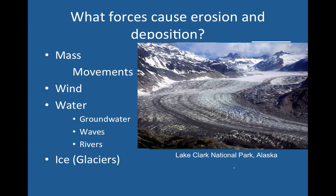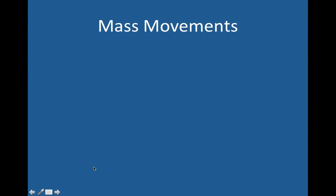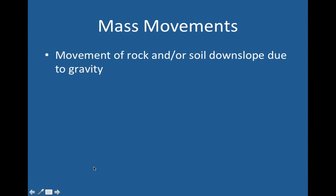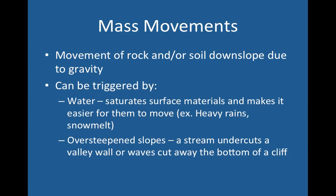Let's start with mass movements. They're the movement of rock or soil downslope due to gravity. The other types of erosion are related to gravity as well — a river moves downhill because of gravity, and so does a glacier — but mass movement happens just because of gravity. It can be sped along or triggered by water. If water saturates the materials at the surface and makes it easier for them to move, like after a heavy rain or a snow melt, that can trigger a mass movement.